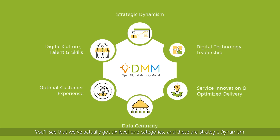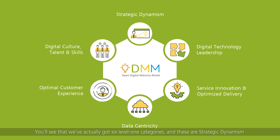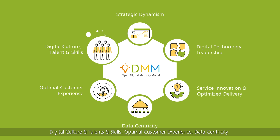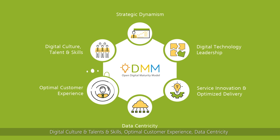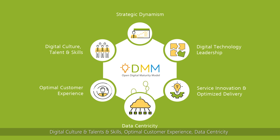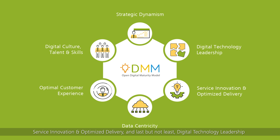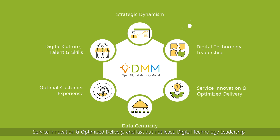We've defined six level-one categories: strategic dynamism, digital culture talent and skills, optimal customer experience, data centricity, service innovation and optimized delivery, and last but not least, digital technology leadership.